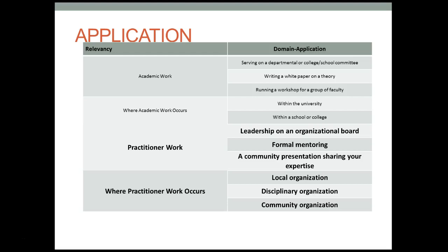When we look at application — the domain that seeks to apply knowledge to solve societal problems — academic work can include serving on a department committee, writing a white paper, or running a workshop for a group of faculty. For the practitioner, this can include leadership on an organizational board or formal mentoring of employees or people in the community. Practitioner work can also include a community presentation wherein you share your expertise, especially when it comes to looking at ways to improve society. Practitioner work often occurs in local organizations, community organizations, or organizations that are discipline specific.